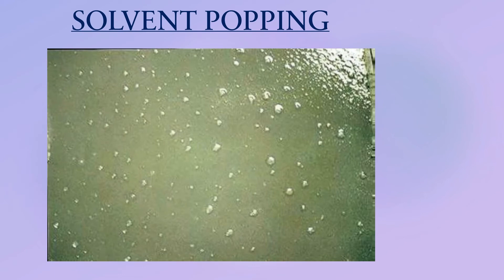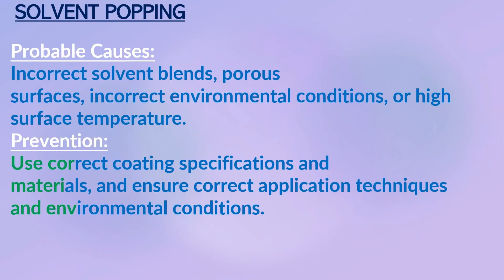Solvent Popping: solvent bubbles on the surface of the paint film soon after application. Probable causes: incorrect solvent blends, porous surface, incorrect environmental conditions, or high surface temperature. Prevention: use correct coating specification and materials, and ensure the correct application techniques and environmental conditions.